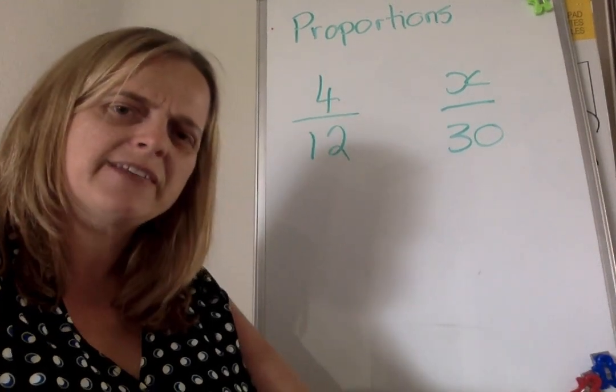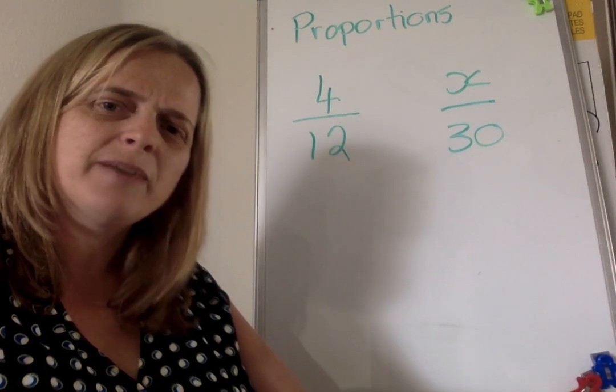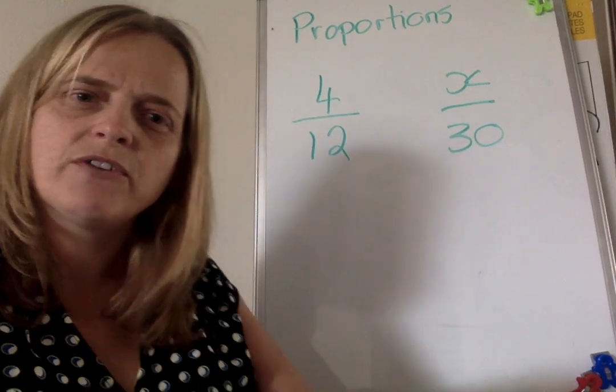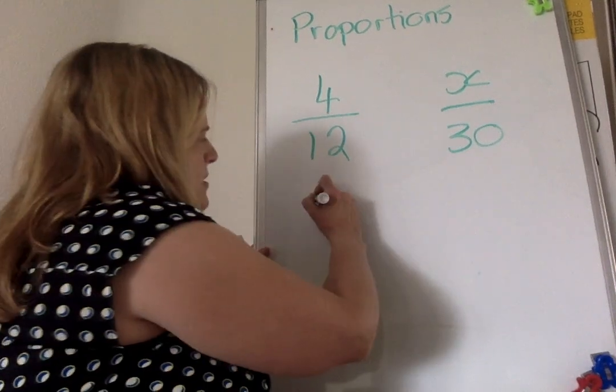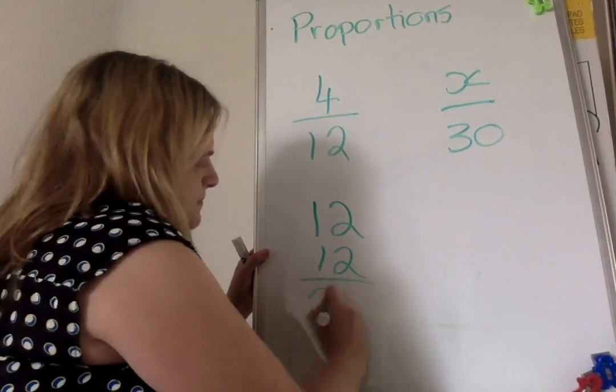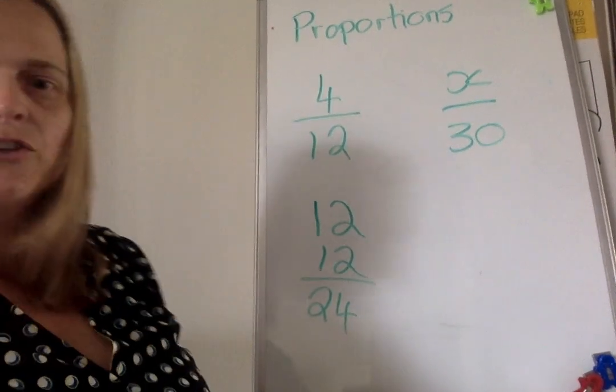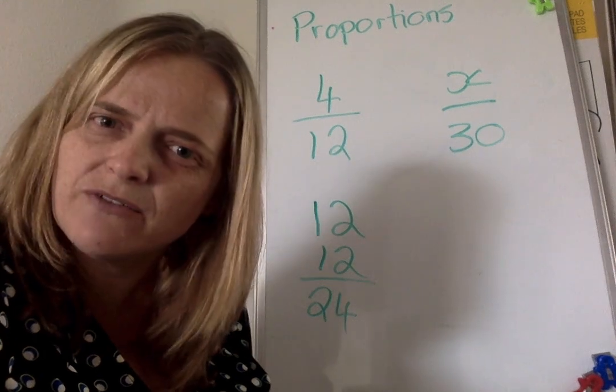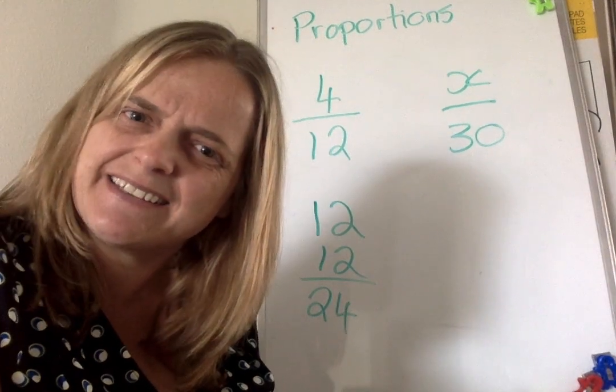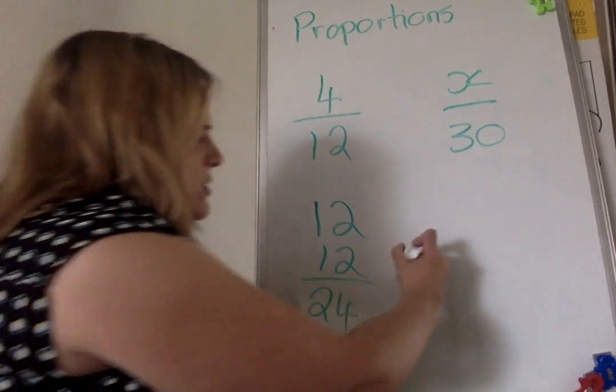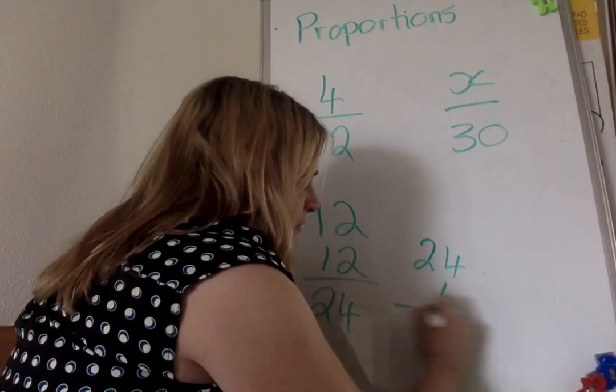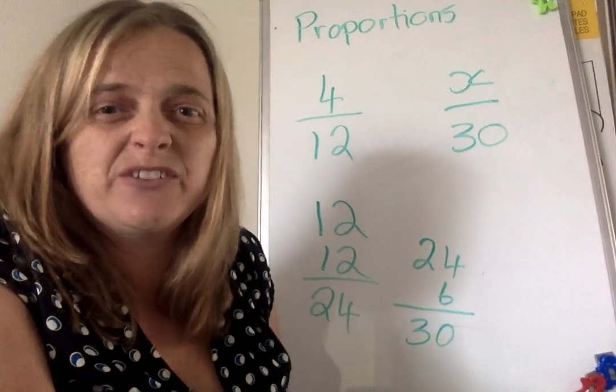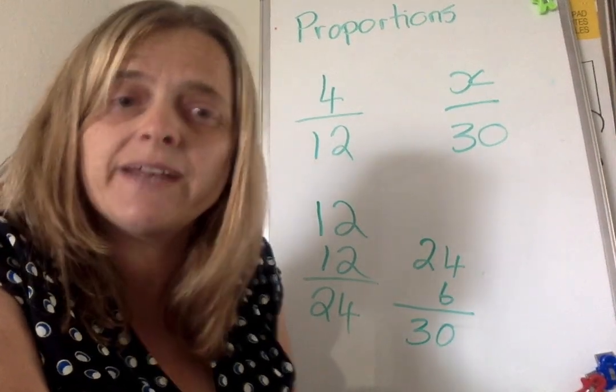What if I added half of 12? 24 plus 6—oh yeah, that works! 24 plus half of 12 is 30. So in this case, I multiplied it by 2.5.